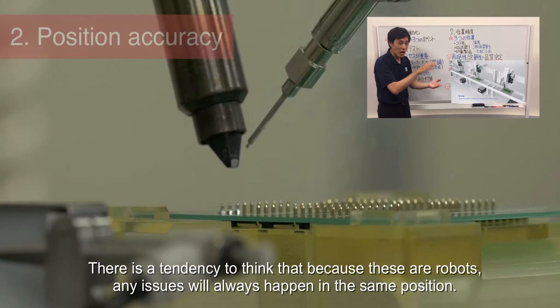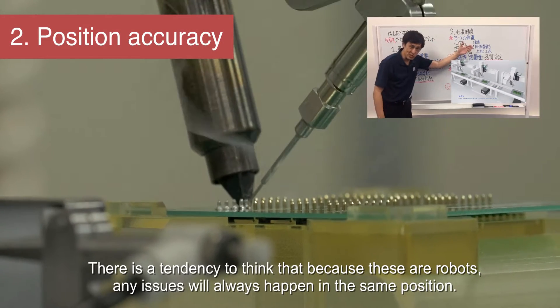The second key is positional accuracy. There is a tendency to think that because these are robots, any issues will always happen in the same position.